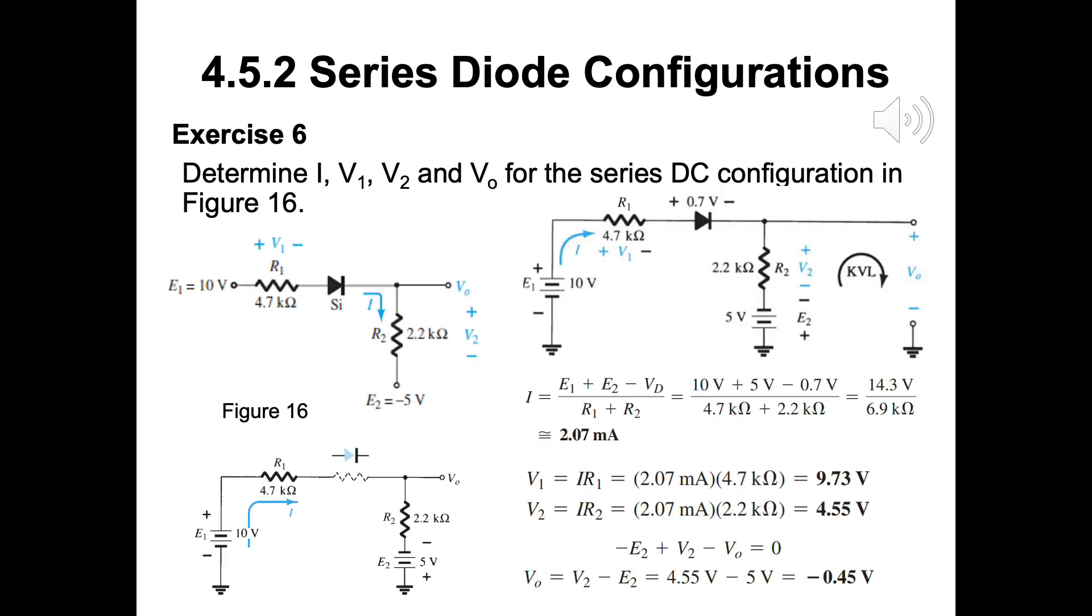Exercise 6. Determine I, V1, V2 and V0 for the series DC configuration in figure 16. I can be analyzed by applying the KCL in left bottom figure. I will be 2.07mA. Having this I, we can solve the V1 and V2. Then, apply the KVL for finding the value for VO. VO is equal to minus 0.45V.